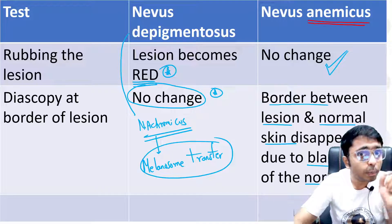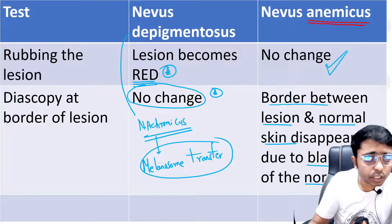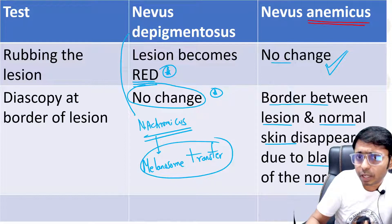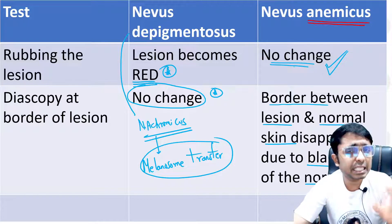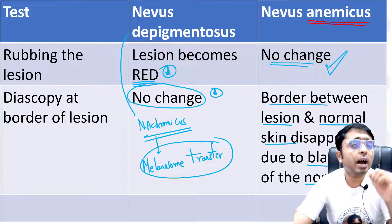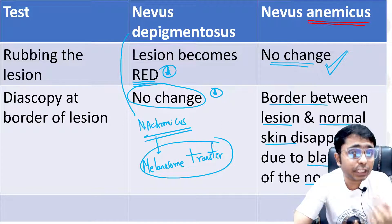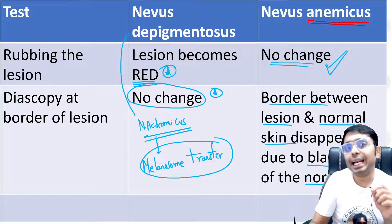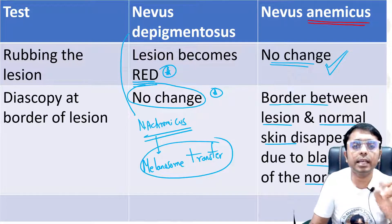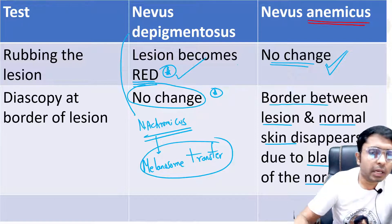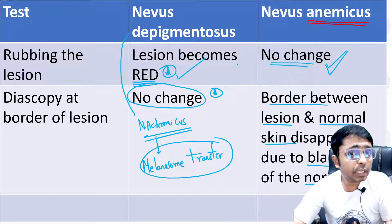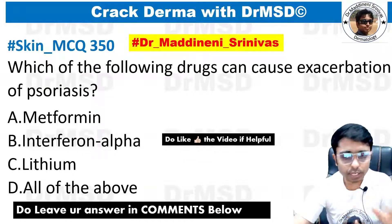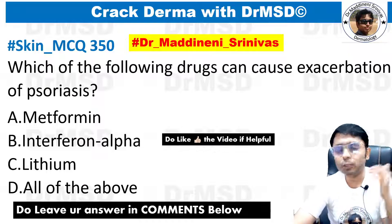This is how you can differentiate these two conditions — using diascopy and rubbing the lesion. In Nevus Anemicus, because the lesional blood vessels are excessively vasoconstricted, even after provocation by rubbing there will be no vasodilatation and no redness or erythema. In Nevus Depigmentosis, rubbing the hypopigmented lesion will cause it to become red.